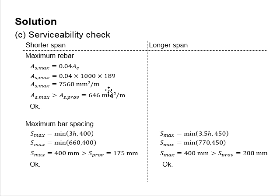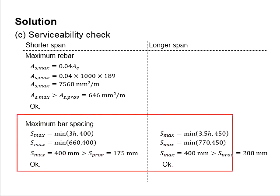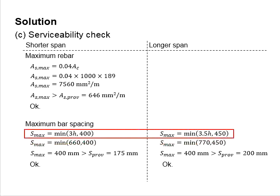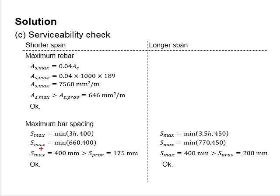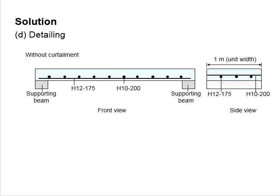Next, check the maximum reinforcement bar using the higher provided reinforcement, and also check for maximum bar spacing. Both directions are checked as requirements differ. The maximum spacing is found to be limited to 400 mm, which is greater than 175 mm and 200 mm, so the maximum spacing is acceptable. Lastly, provide detailing for the member, with details given accordingly.